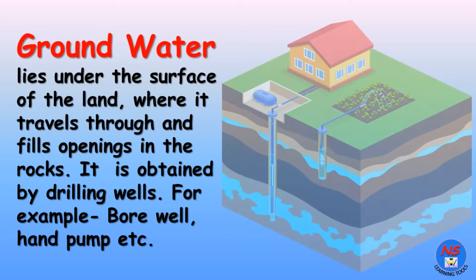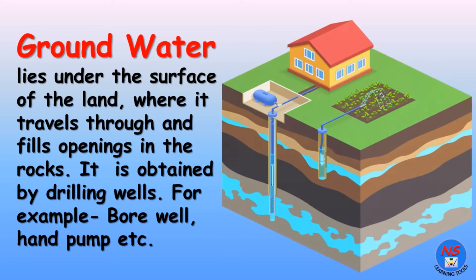Groundwater lies under the surface of the land, where it travels through and fills openings in the rocks. It is obtained by drilling wells. For example, bore well, hand pump, etc.